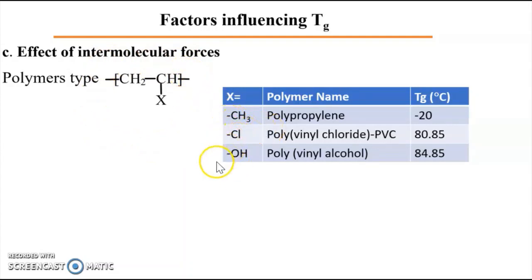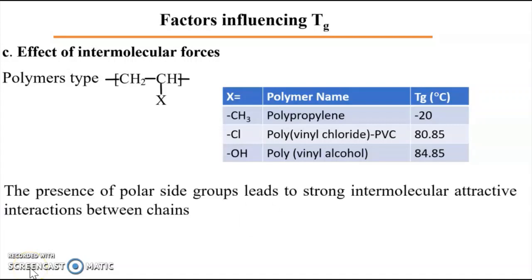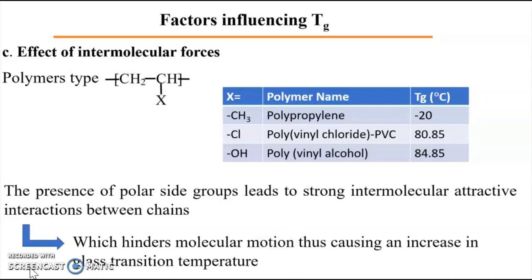With the same molecular mass, we change the substituent. Looking at CH3, Cl, and OH: the highest interaction between the polymer chains will be through the hydrogen bonds of the hydroxyl group, and thus the Tg of this polymer having OH groups — polyvinyl alcohol — has the highest Tg. The presence of polymer side groups leading to strong intermolecular interactions between polymer chains decreases the molecular motion between these chains, thus causing an increase in the glass transition temperature.